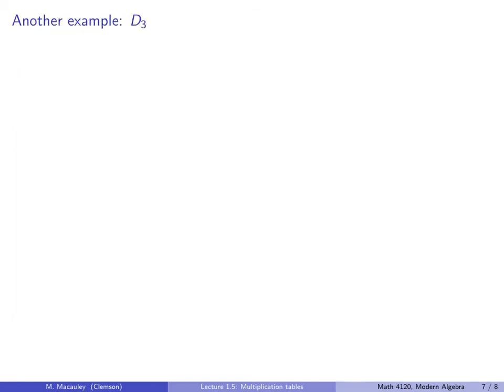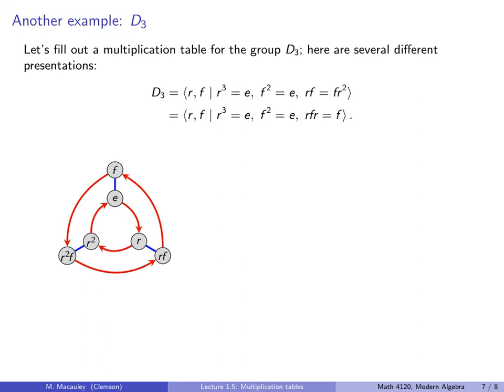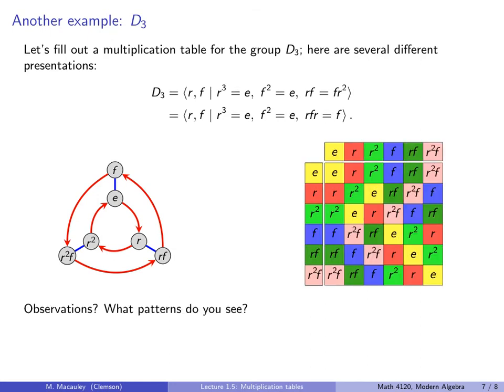Let's do another example, the group D3. Let's fill out a multiplication table for the group D3. Recall here are several different presentations. In both of these presentations, the group is generated by a rotation R and a reflection F. R has order three, R cubed is the identity. That's obvious. R R R is the identity. F squared is the identity. F F is the identity. Then there's two different ways to describe how R and F interact. This one is RF equals FR squared. In other words, RF is the same thing as doing FR squared. But here's a different way we can do it. We can say anytime that we do RFR, it's just the same as F. Notice that holds from anywhere. If we start from here and we do RFR, that's the same as if we had just done F.